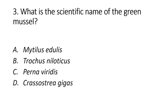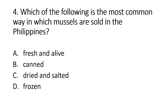Number 3. What is the scientific name of the green mussel? A. Midtelis itelis. B. Trachis niloticus. C. Perna viridis. D. Crassostrea gigas. The answer is letter C, Perna viridis. Number 4. Which of the following is the most common way in which mussels are sold in the Philippines? A. Fresh and alive. B. Canned. C. Dried and salted. D. Frozen. The answer is letter A, fresh and alive. Mussels are commonly sold fresh and alive in the Philippines, often in wet markets or seafood markets.